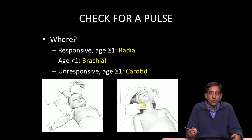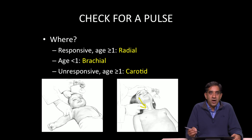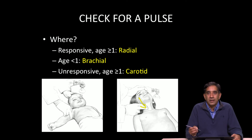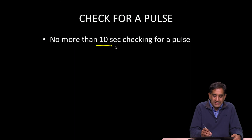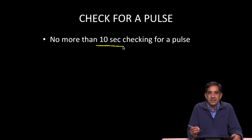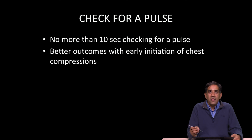So the patient's age and responsiveness determine where you check for a pulse. Responsive and greater than or equal to one, it's a radial pulse. Age less than one, always, regardless of whether they're responsive or not, you're going to check at the brachial location. And if they're unresponsive and over the age of one, you're going to check for a carotid pulse. Remember, when you're checking for a pulse, not to spend more than 10 seconds. If after 10 seconds you can't determine whether the patient has a pulse or not, just assume that they don't have a pulse.